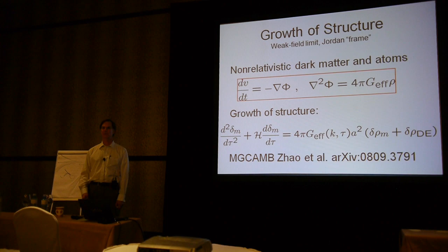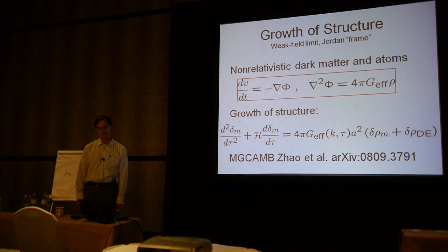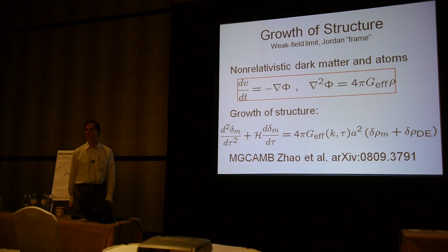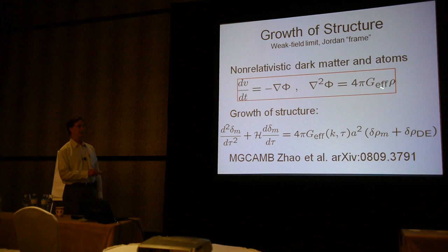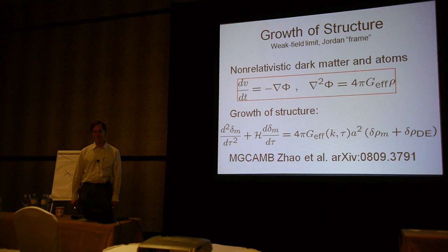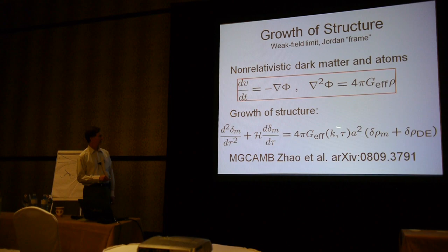In the growth of structure, even in theories with fifth forces, provided they couple universally, one can go to a frame with no fifth forces by redefining fields—the so-called Jordan frame—where the non-relativistic motion of particles obeys Newton's laws and the universality of free fall holds. The Poisson equation would be modified with an effective Newtonian gravitation coupling. Combining the continuity and Euler equations for cold matter gives the famous growth of structure equation, sensitive to the variation of the Newton constant.